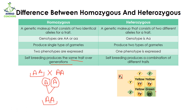In case of heterozygous, self-breeding produces a combination of different traits. With capital Y and small y crossed together: when capital Y fuses with capital Y we get yellow seeds; when capital Y fuses with small y we also get yellow seeds because capital Y is dominant and small y is recessive; but when small y fuses with small y we get a green seed.